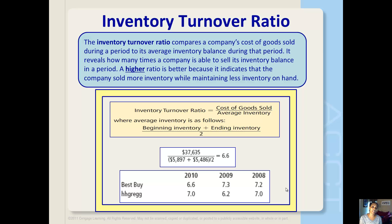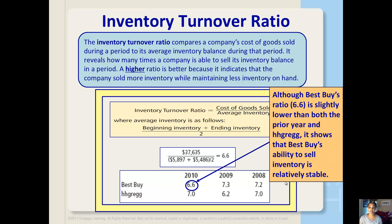The inventory turnover ratio compares a company's cost of goods sold during a period to its average inventory balance during that same period. It reveals how many times a company is able to sell its inventory balance in a period. A higher ratio is better because it indicates that the company sold more inventory while maintaining less inventory on hand. Best Buy has an inventory turnover ratio of 6.6, which is a little bit lower than last year and HH Gregg.